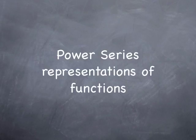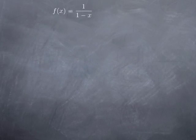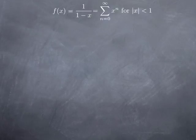Now we are going to discuss representation of functions as power series. An example we've already discussed is the function 1 over 1 minus x. You can think of the 1 at the top as the first term of a geometric series, and at the bottom 1 minus x can be thought of as 1 minus a common ratio. So this is really just a sum from 0 to infinity of x to the n, because this is a geometric series of common ratio x with first term 1, which is x to the 0.